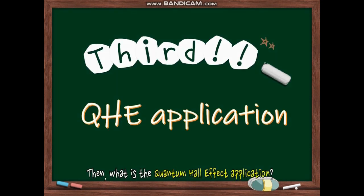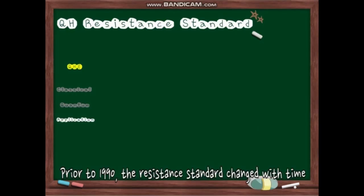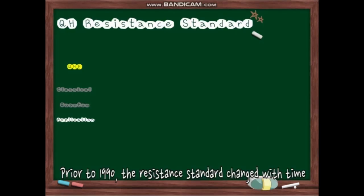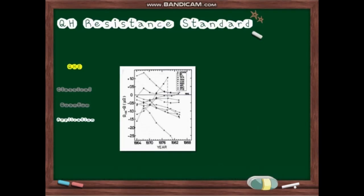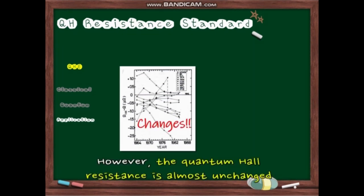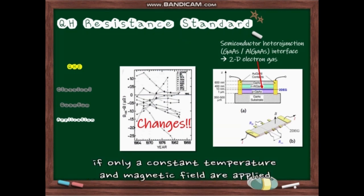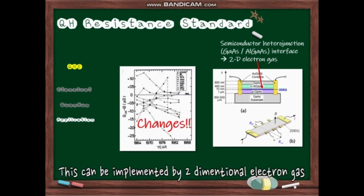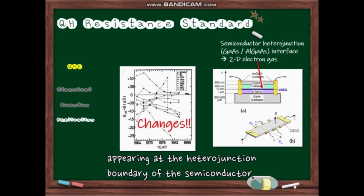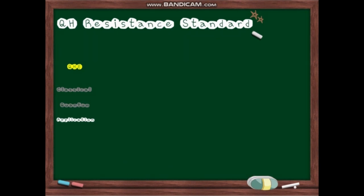Then, what is the quantum Hall effect application? Prior to 1990, the resistance standard changed with time because the physical properties of resistor changes. However, the quantum Hall resistance is almost unchanged if only a constant temperature and magnetic fields are applied. This can be implemented by two-dimensional electron gas appearing at the heterojunction boundary of the semiconductor. This is the principle.